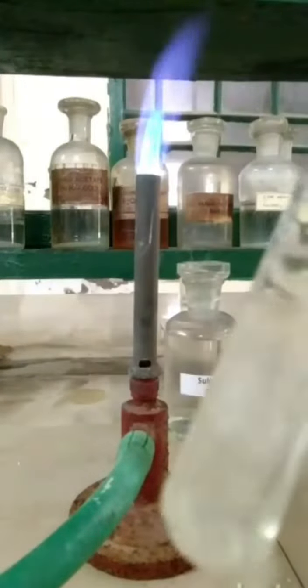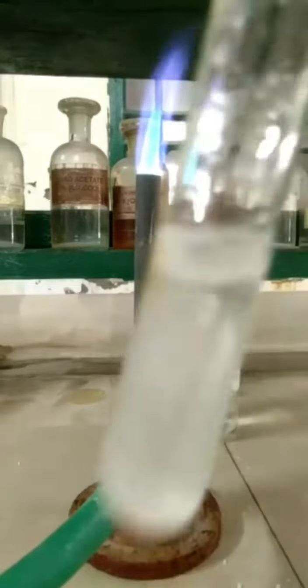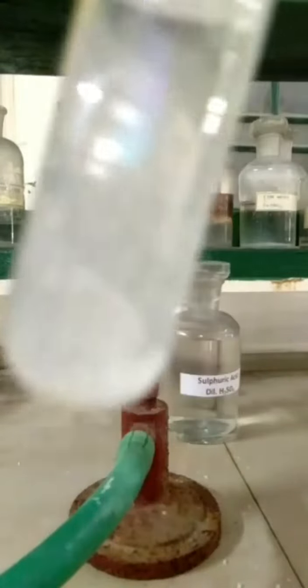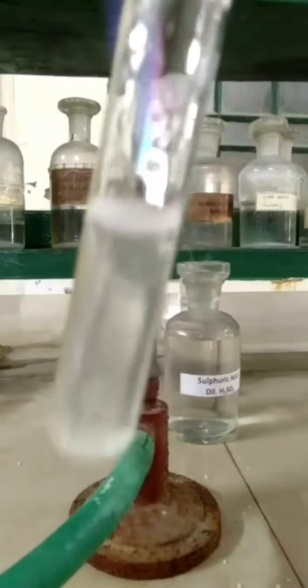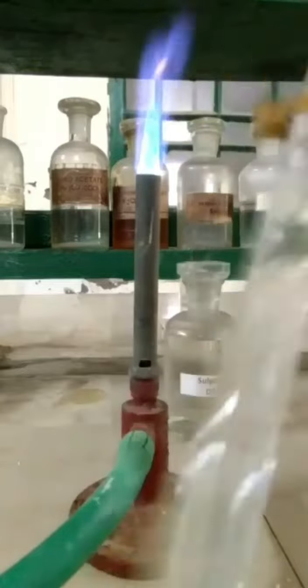To this aqueous solution of the salt, add dilute HCl to check whether the first group is present or not. After adding dilute HCl, if no precipitate is obtained, it will confirm the absence of first group.